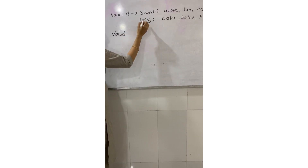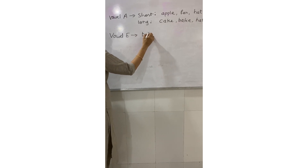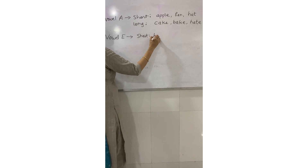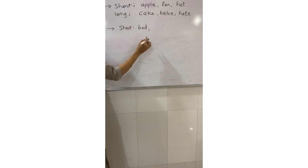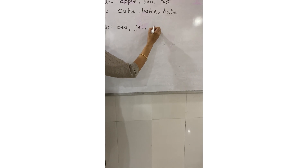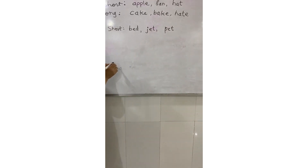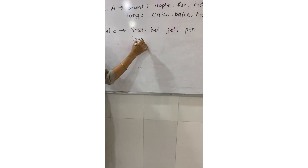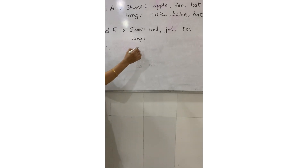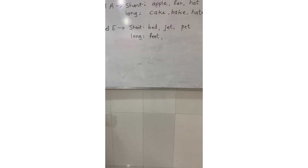Now let us see the short and long sound of vowel E. Short sound examples: 'jet', 'pet'. These are short sounds of E. Now the long sound of vowel E: 'feed', 'leaf'. These are the long sounds of vowel E.